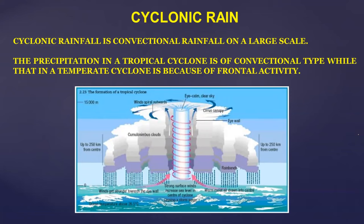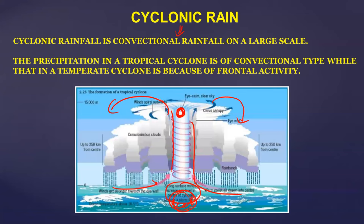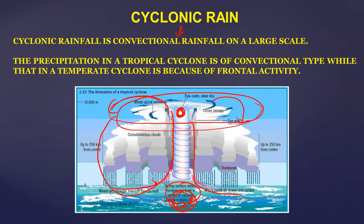Cyclonic rainfall occurs when depressions — seeds of cyclones — cause air to converge from all sides and rise in a cylindrical fashion, forming the eye of the cyclone. Upper air divergence leads to cumulonimbus cloud formation over a larger area. The cycle continues as wind rises with moisture until the cyclone reaches land, where the moisture supply from below is cut off.